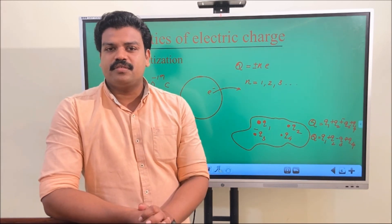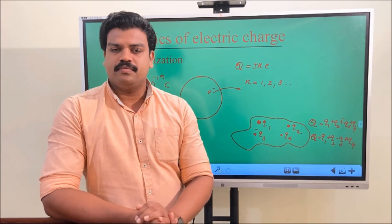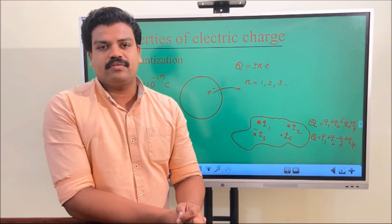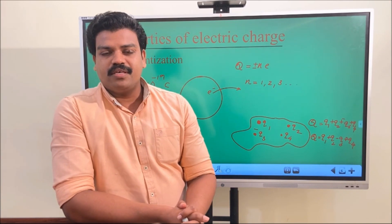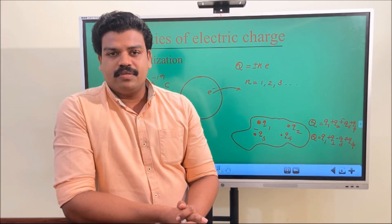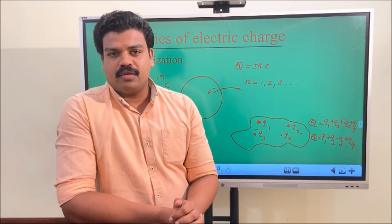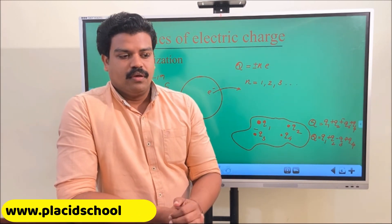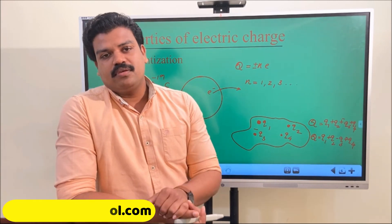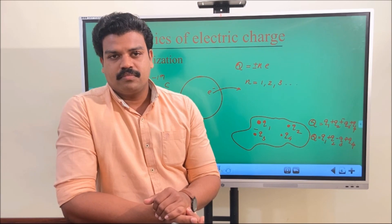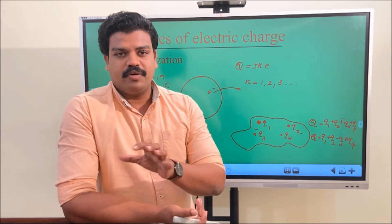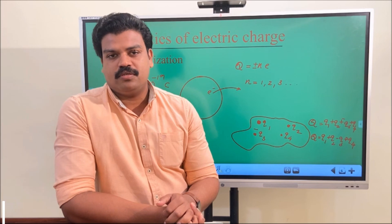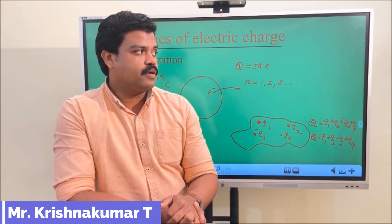There is no change in the magnitude of charge due to motion or speed. This is unlike mass, where Einstein's theory of relativity states m = m₀ / √(1 − v²/c²) — meaning if a body moves at the speed of light its mass becomes infinite. But in the case of charge, the magnitude does not change due to motion. These are considered the fundamental properties of electric charges.